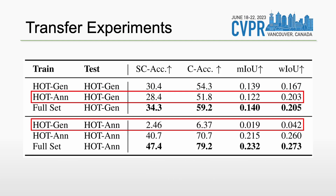We also conduct transfer experiments. The model trained on HOT-annotated generalizes well to HOT-generated, but not vice versa. This is because the HOT-annotated set is captured in the wild with a richer variation. Combining both sets further boosts performance.